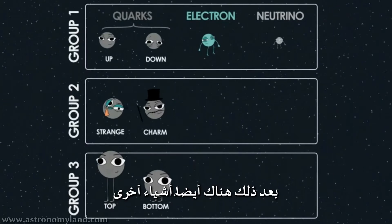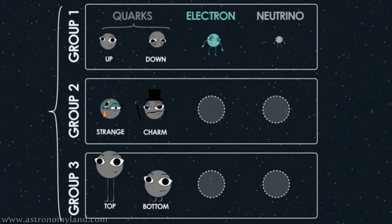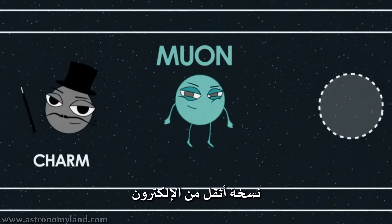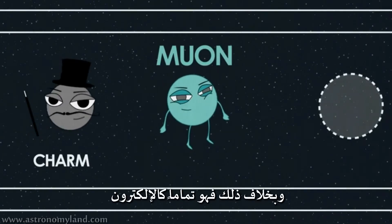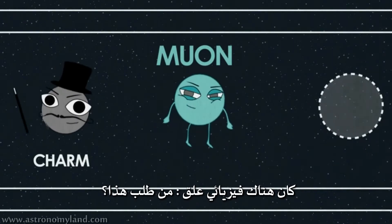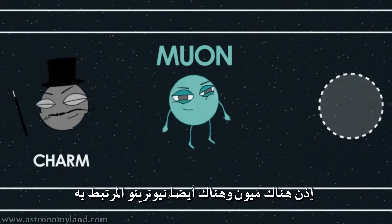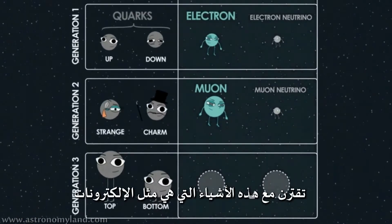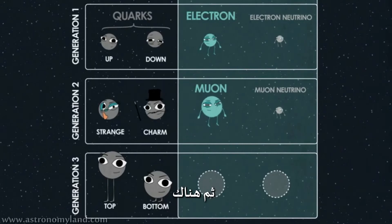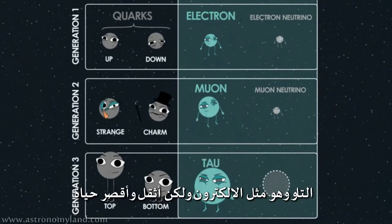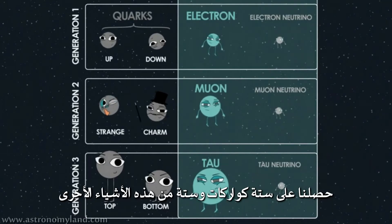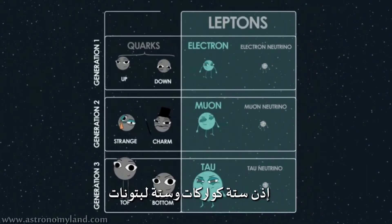There are two more groups like that - they're called generations. There's also a thing called the muon, which is like a heavier version of an electron. When it first showed up in a particle accelerator, there was a physicist who said 'who ordered that?' So there's a muon and an associated muon neutrino. It turns out these neutrinos are paired up with things that are like electrons - the electron and electron neutrino, the muon and muon neutrino. And then there's the tau, which is like an even heavier and shorter-lived electron, and the tau neutrino. These other things are called leptons - so six quarks and six leptons.